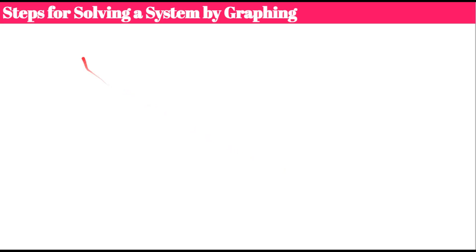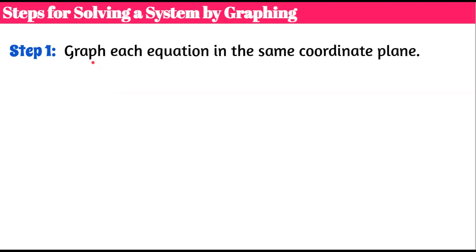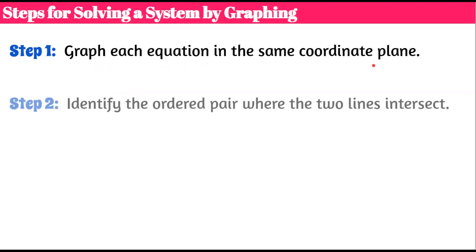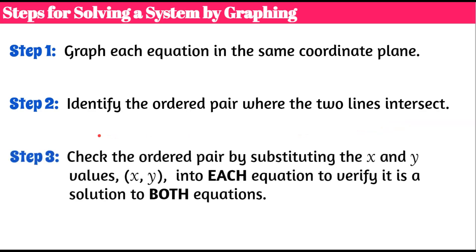Here are the steps for solving a system by graphing. Step one: graph each equation in the same coordinate plane. Step two: identify the ordered pair where the two lines intersect. Step three: check the ordered pair from step two by substituting the x and y values into each equation to verify it is a solution to both equations. Three simple steps.